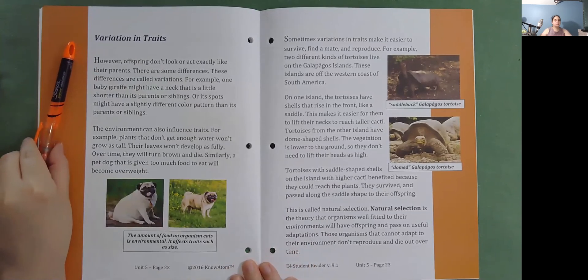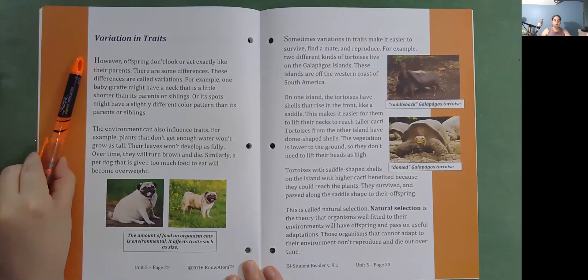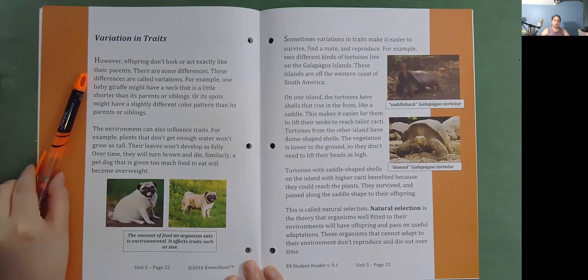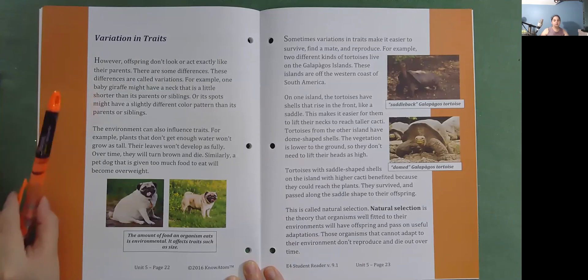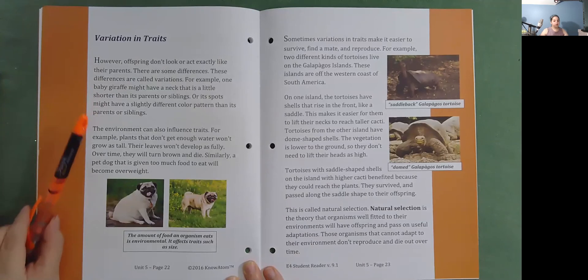Variation in traits. However, offspring don't look or act exactly like their parents. There are some differences. These differences are called variations. For example, one baby giraffe might have a neck that is a little shorter than its parents or siblings. Or its spots might have a slightly different color pattern than its parents or siblings. The environment can also influence traits.